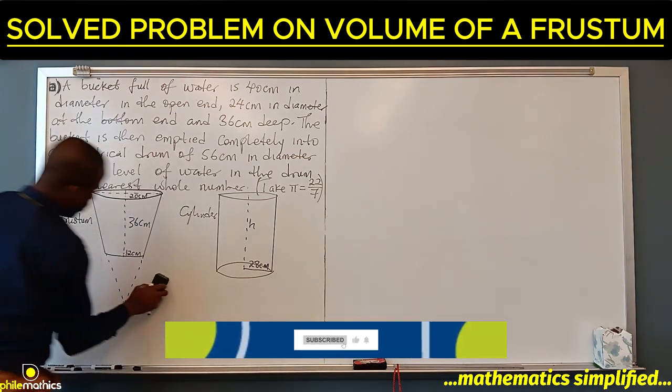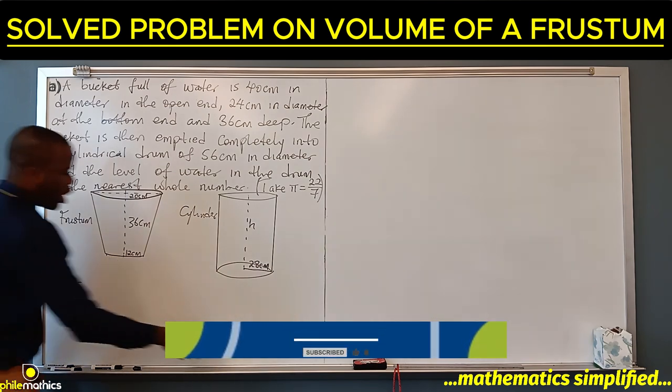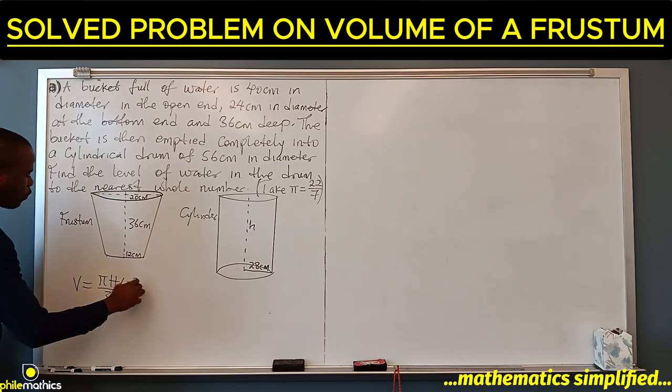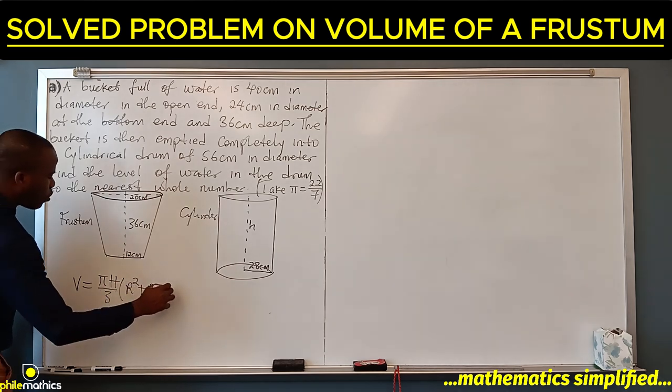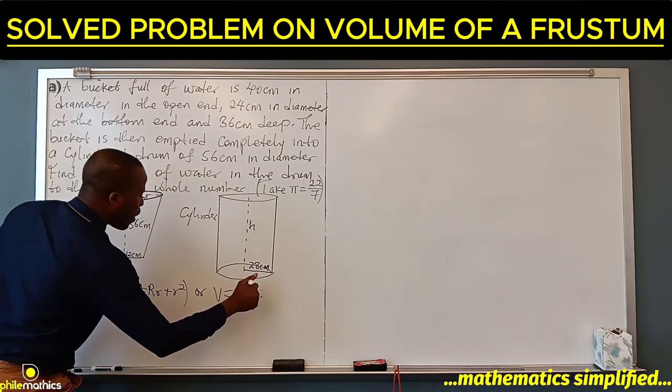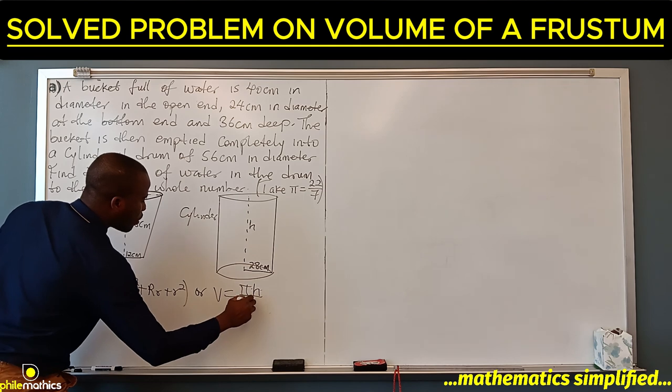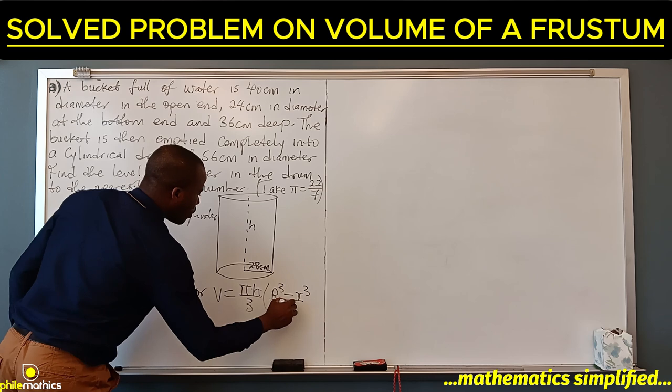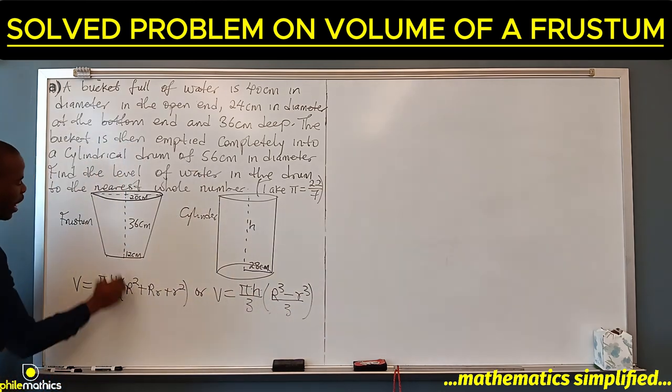But that will take a longer process. We have two different formulas for it. The two formulas are: Volume = πh/3 times (R² + Rr + r²), where R is the big radius and r is the small radius. Or, Volume = πh/3 times (R³ - r³), where h is the height of the frustum. Let's use this formula to make it easier for us.